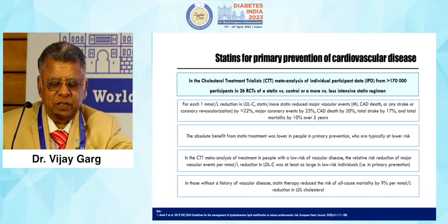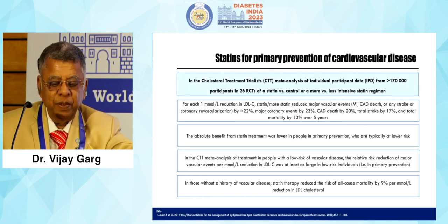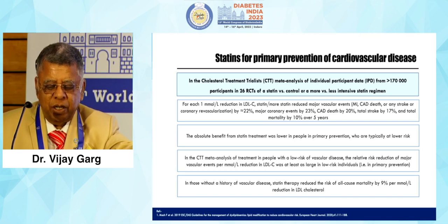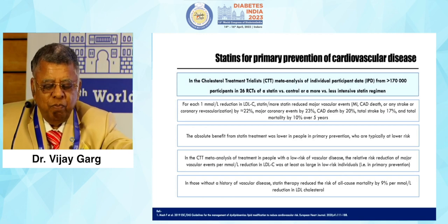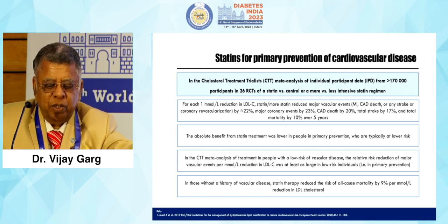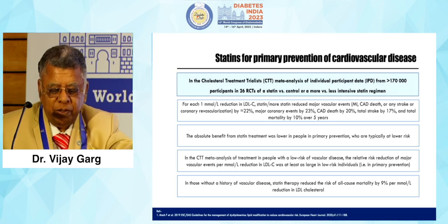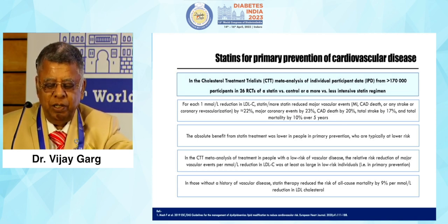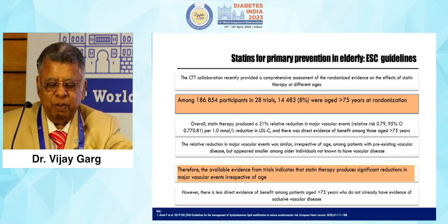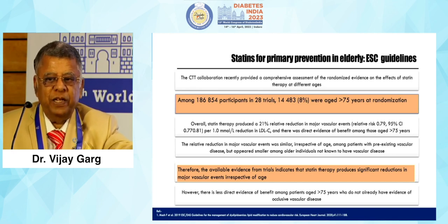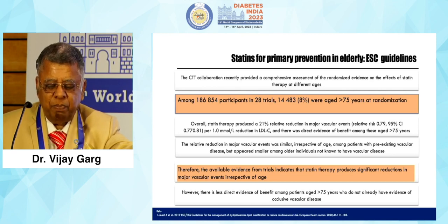In the Cholesterol Treatment Trialists' meta-analysis of individual participant data from more than 1,700,000 participants across 26 trials comparing statins versus control or more versus less intensive statins: each 1 mmol/L reduction in LDL by statins reduces major vascular events or stroke by 22 percent, major coronary events by 23 percent, vascular death by 20 percent, and total mortality at 10 years. Even in those without a history of vascular disease, statin therapy reduces all-cause mortality by 9 percent. Among 1,800,000 participants across 28 trials, benefit is seen even in those over 75 years of age. The evidence indicates statins produce significant reductions in major vascular events regardless of age.